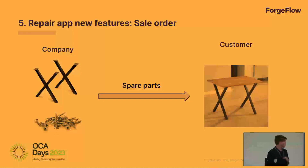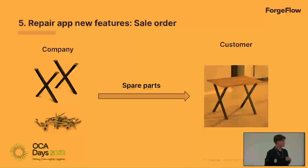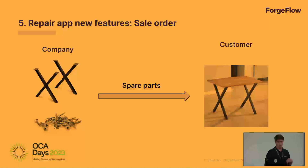Another thing that occurs in companies is that customers don't want to contract the repair — they just want to buy the parts or components they need and repair it themselves. For that case, we introduced a new feature that allows creating a sales order directly from the repair app, so the company sells the spare parts to the customer and the customer repairs it by himself. Once the sales order is confirmed, the repair is done.